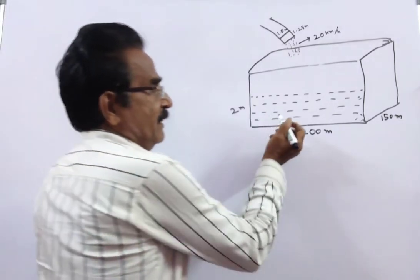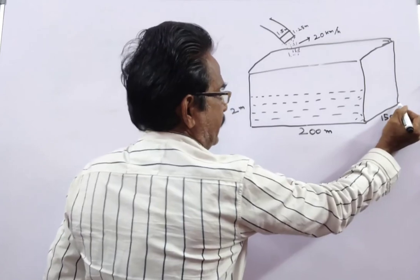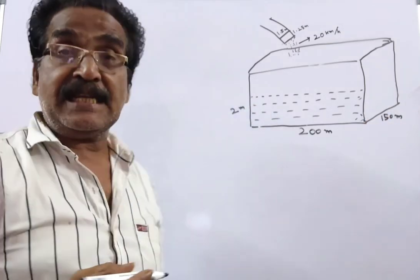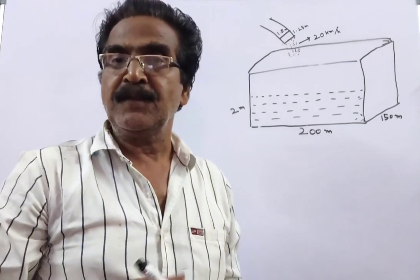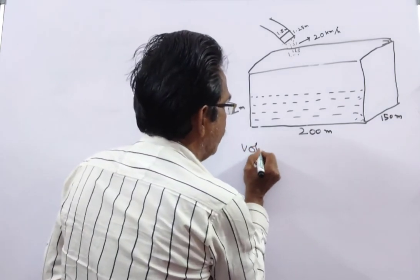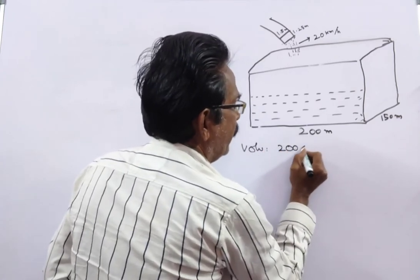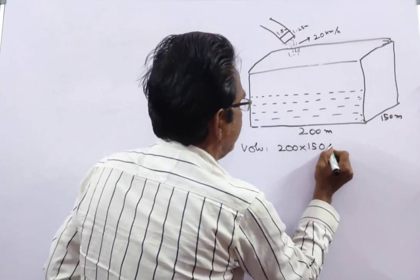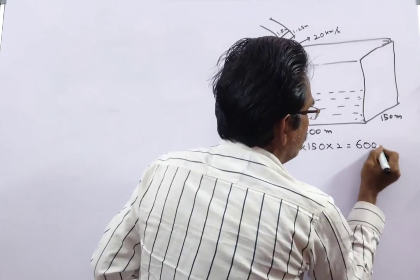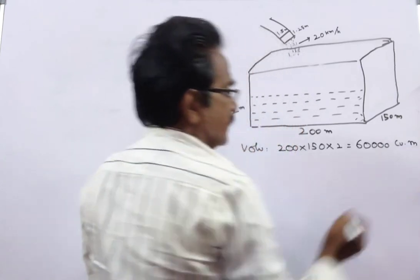See friends, the length of this tank is 200 meters, breadth 150 meters, and the level of water must reach a height of 2 meters. Then the volume of the water in the tank is 200 × 150 × 2, that is equal to 60,000 cubic meters.